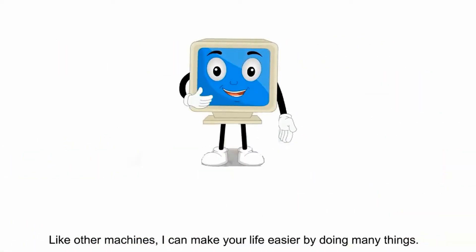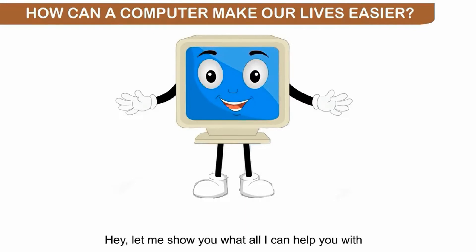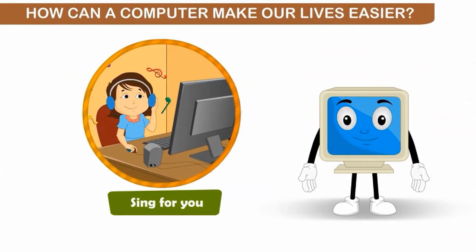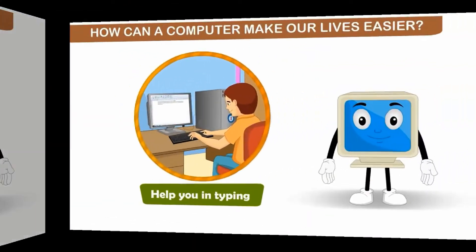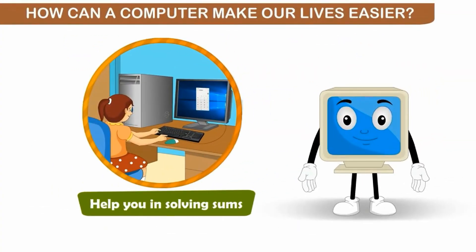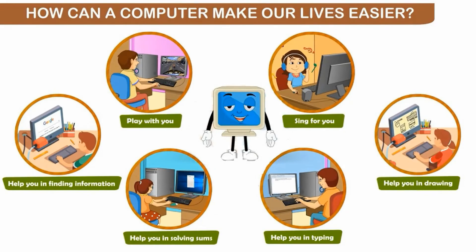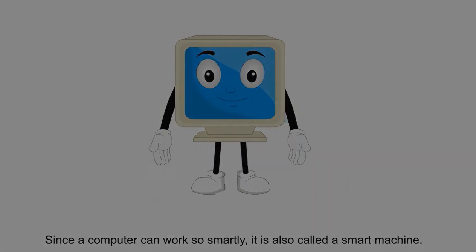Now the computer, like other machines, can make our life easier by doing many things. Let's see what things we can do with the computer. The computer can help you play games, listen to music, and draw. Also you can type and make documents and help you solve problems. You can also find information on the internet. So because the computer can do so many things for you at the same time, it is also called a smart machine. Like many other machines that we have, a computer also has some features.